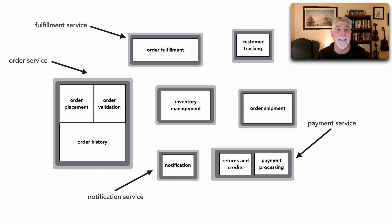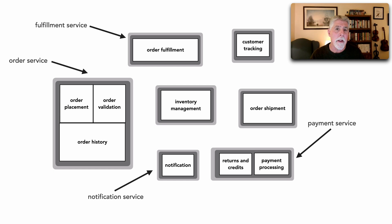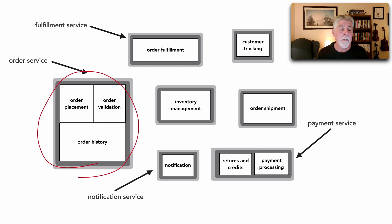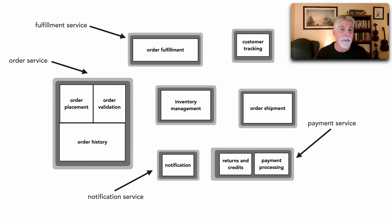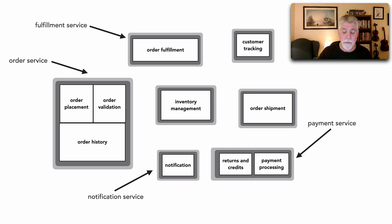This is a very important point: it's not always a one-to-one. Different architecture styles support different types of granularity or size of a service. Notice here the order service includes three components, inventory management is only a single component, whereas the payment service is two. So it's not necessarily always a one-to-one with an architecture component and a corresponding service in a distributed architecture.